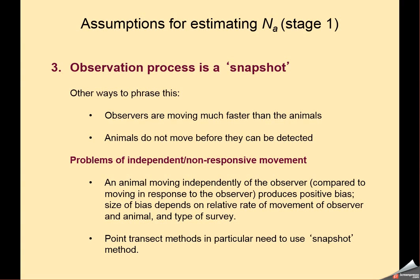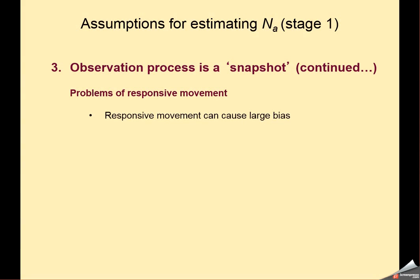This is particularly acute when working with point transect methods because the observer is not moving at all. So any movement by the animals leads to potential detection of animals as they come toward you and missing of animals as they move away from you. That's bias caused by animal movement when the animals are not paying attention to you, they're just moving in their normal course of events.